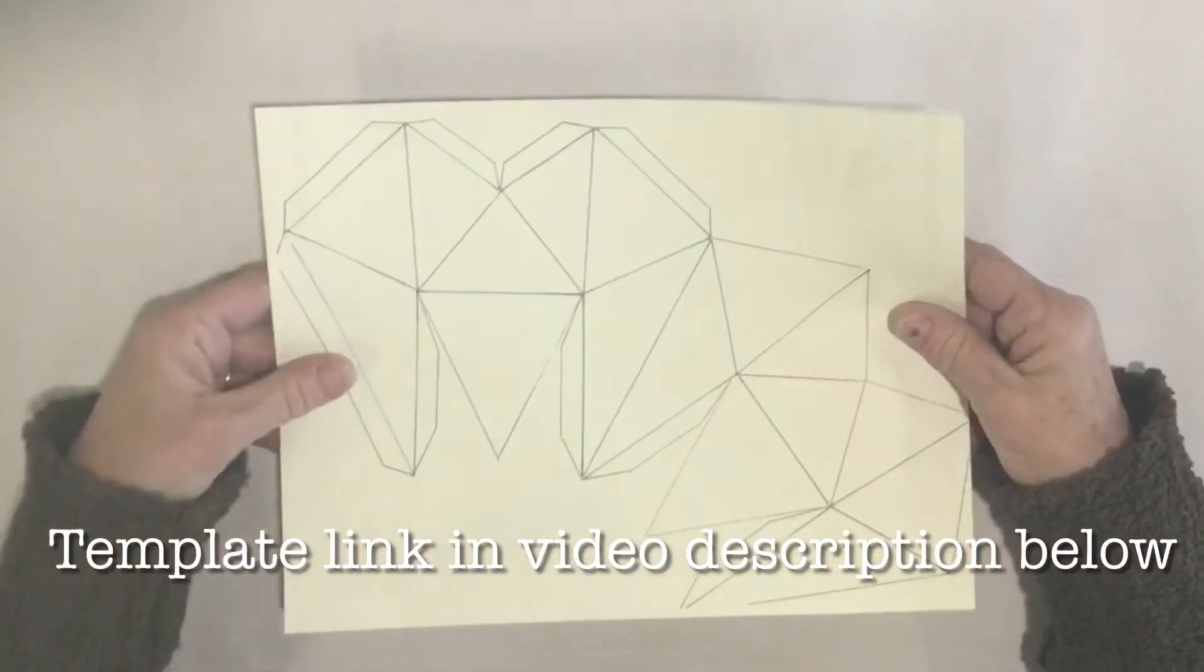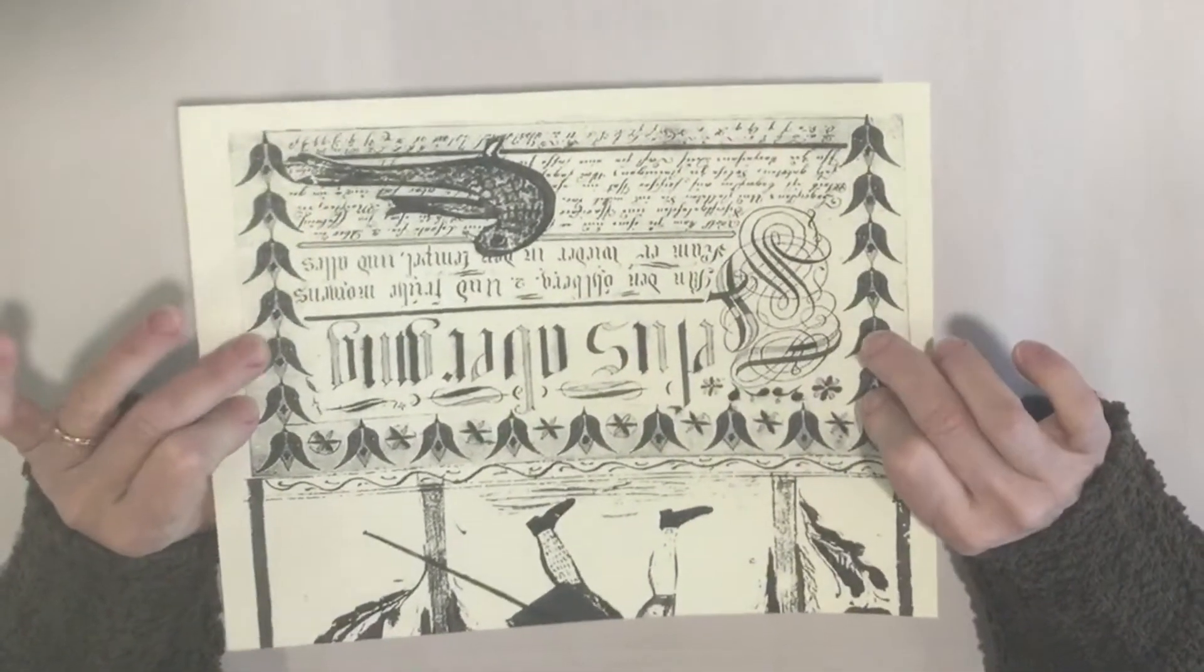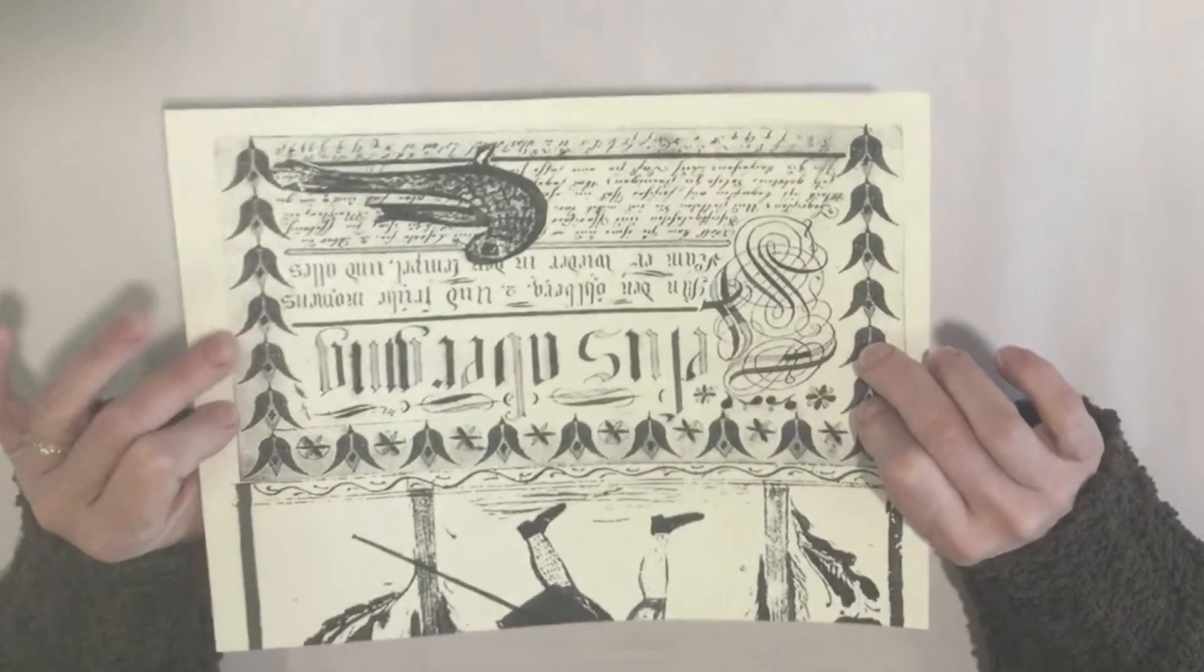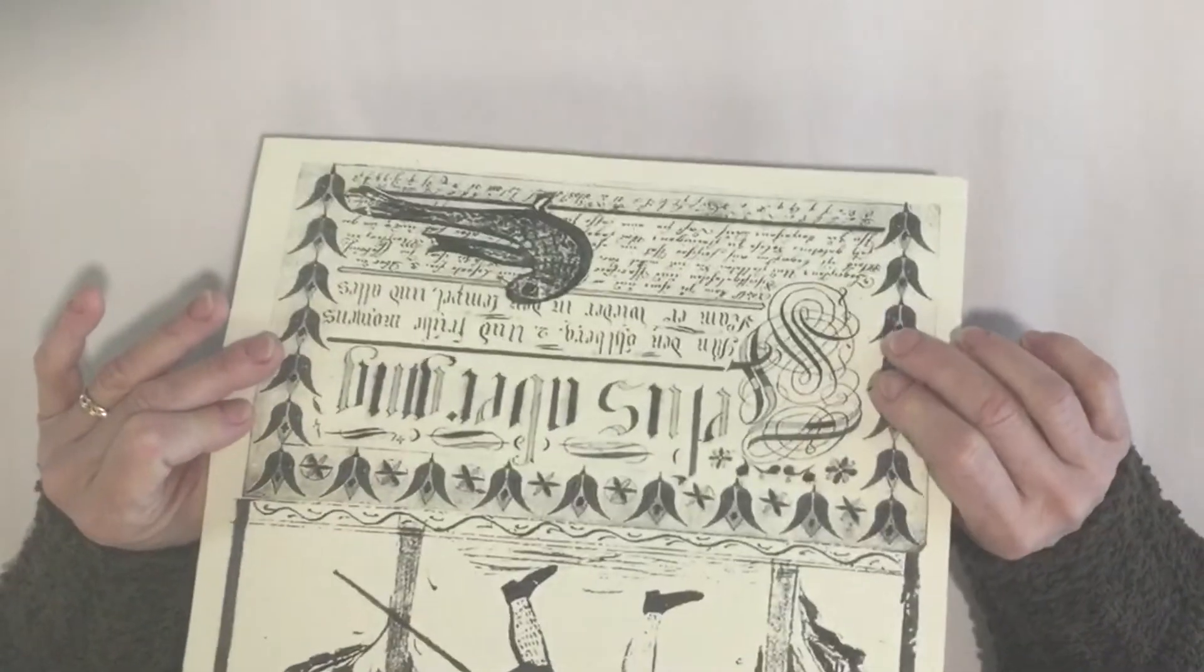After you've gotten this downloaded, you're going to print it onto the back of whatever paper you would like to make your heart out of. I am using this fun paper and I'm going to embellish this paper first, but you could use just a red cardstock or any paper that you would like to.